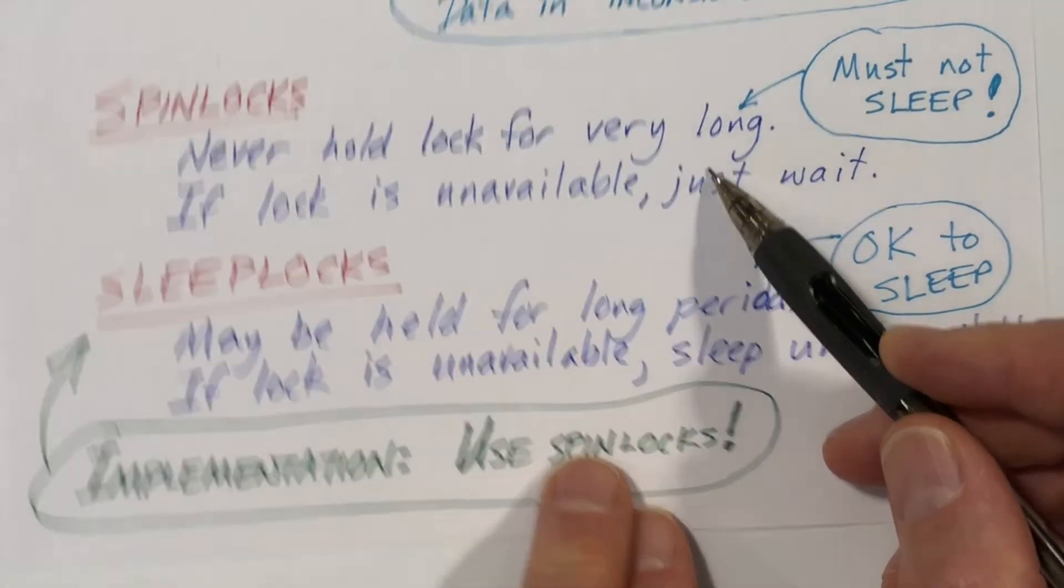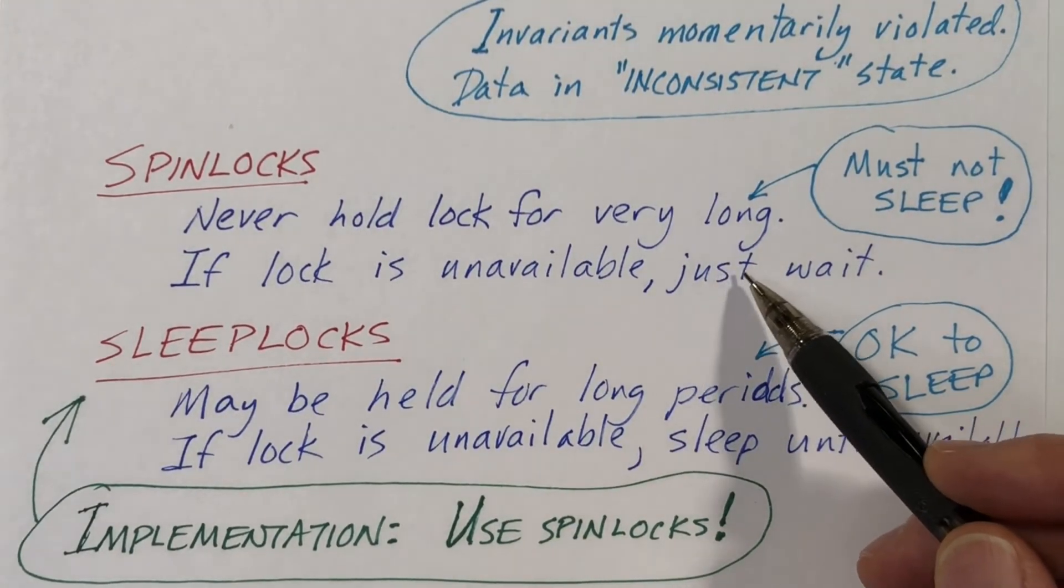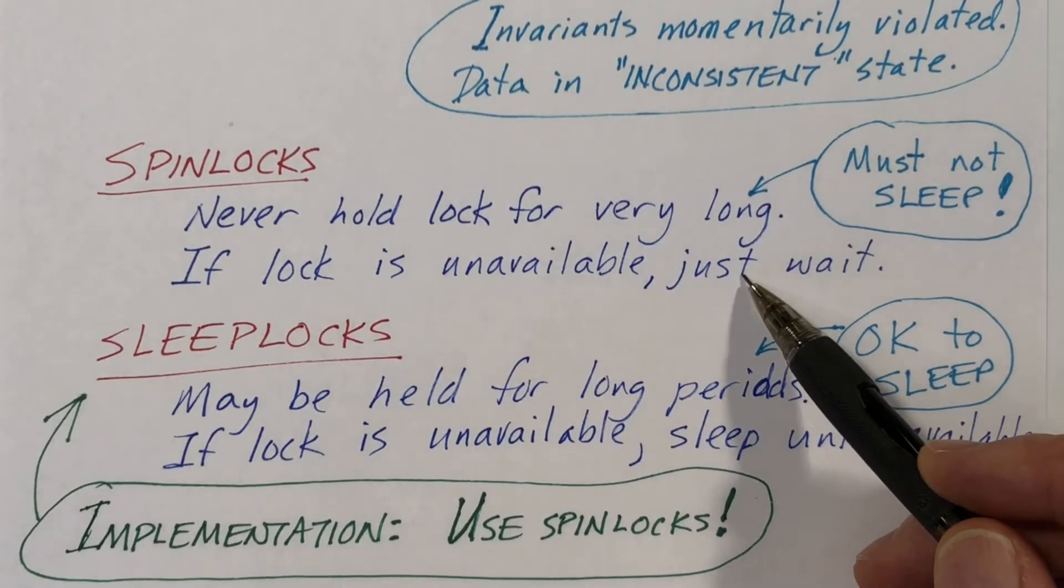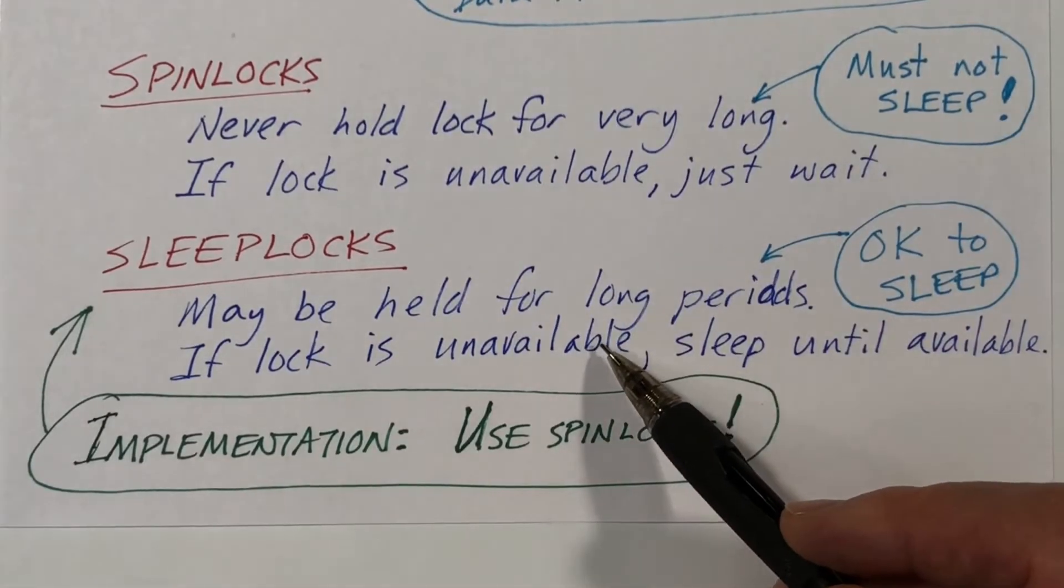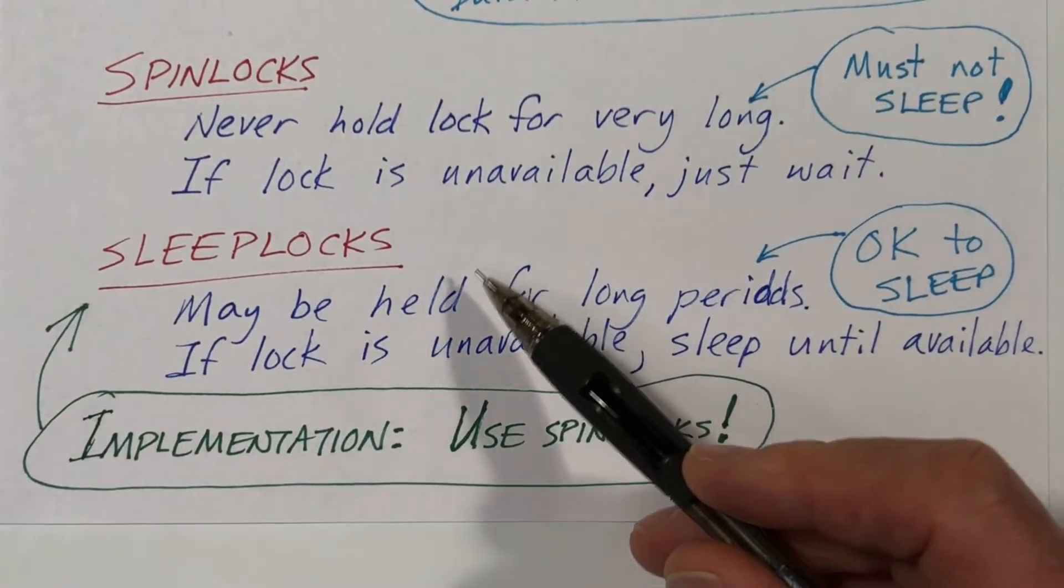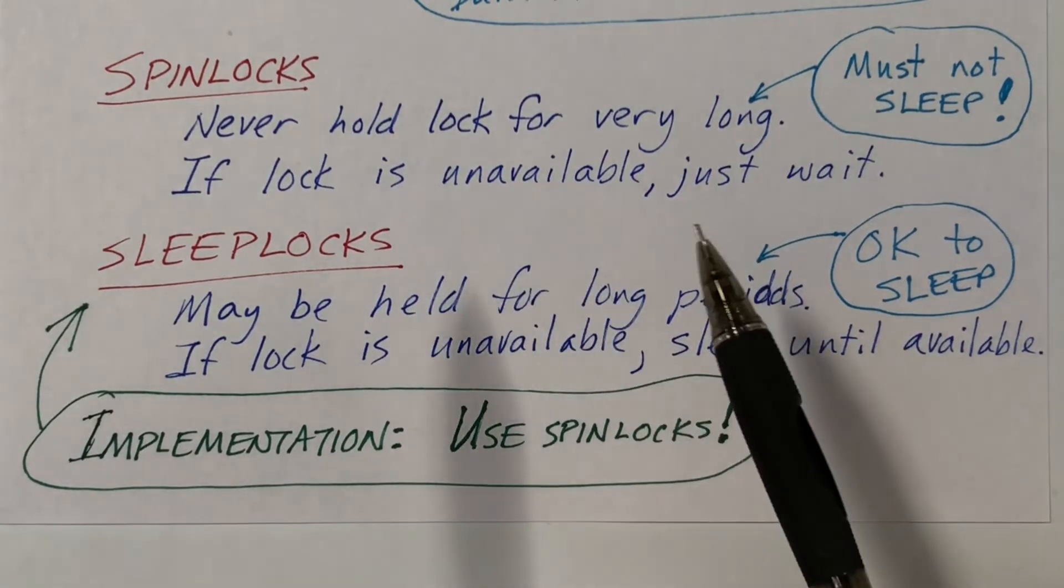We talked about how spin locks were implemented in a previous video, and they're using some sort of a function that will both read and modify data in an atomic operation. For example, a test and set operation, or a compare and swap operation. The implementation for sleep locks is simple. We will just use spin locks in the implementation of sleep locks. So with that said, we can go straight into talking about the code.